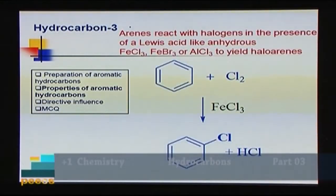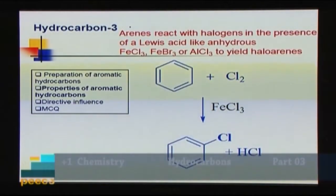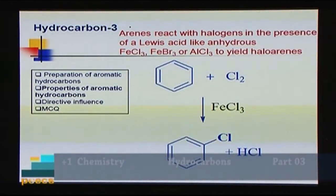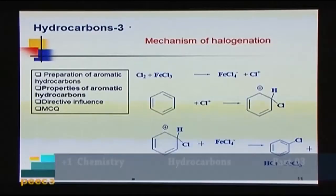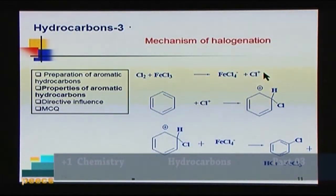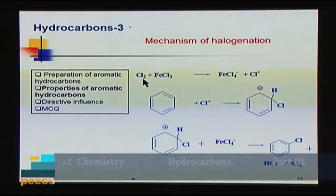The first reaction is halogenation. Benzene reacts with chlorine in the presence of a Lewis acid catalyst such as ferric chloride or aluminum chloride to form chlorobenzene. This replaces hydrogen with chlorine (Cl⁺), making it an electrophilic substitution reaction. The mechanism begins with chlorine reacting with ferric chloride to form the electrophile Cl⁺ and the nucleophile FeCl₄⁻, through heterolytic cleavage of the chlorine molecule.